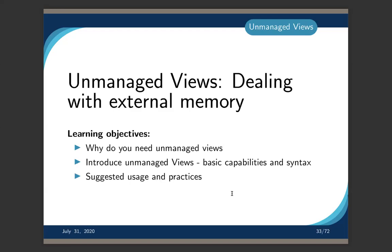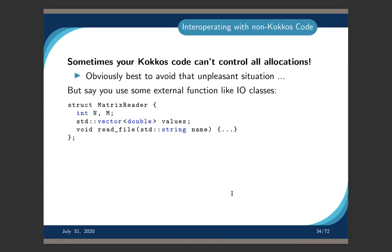Now we come to unmanaged views — largely about dealing with external memory. Sometimes your Kokkos code can't really control all allocations. While it's preferable to let Kokkos allocate all memory (so profiling tools have full visibility and you get proper first-touch semantics), there are real situations where that's not practical. One example is IO functionality — often surprisingly complex code that isn't in the performance-critical path and doesn't need to be converted to Kokkos. The performance bottleneck there is the slowness of IO itself, not a lack of thread parallelism.